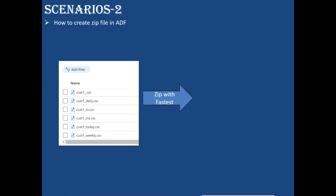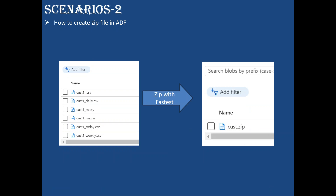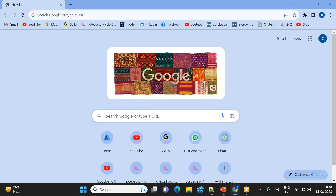For the zip scenario with multiple CSV files using 'fastest' compression, it will just create a single customer.zip file. If you give a specific file name it will use that name; if you don't give a name it will use its own default name and create the zip file. I'll show you both options. Let's start with our lab - total 16 steps to follow.